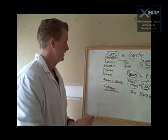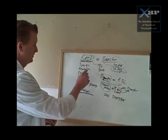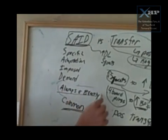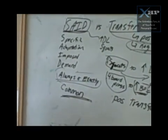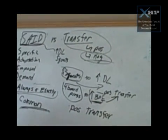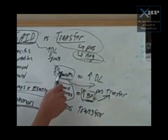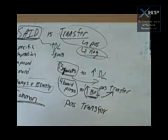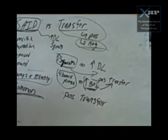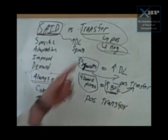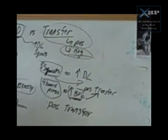So two takeaways. The SAID principle, specific adaptation to imposed demand. The body will always adapt to exactly what you are doing. Sort of the corollary to that is transfer. So I did something that was not specific. For example, I'm going to do squats to increase my deadlift, and if that happens it's a positive transfer. If I did something and I got worse at what my goal was, that's a negative transfer.